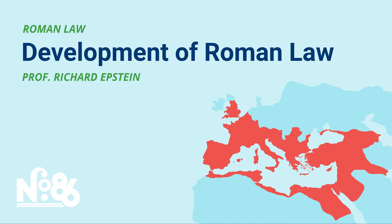Rome went through some pretty big historical changes, like becoming an empire. How did that affect the legal system? When you're trying to figure out the way in which Roman law evolves, it's a very long period of time. Probably the single most important break is the end of the Republic after the death of Caesar and the rise of Augustus, which spanned basically just before and just after the birth of Christ. There are two ways in which you can look at this: as a public law matter, and as a private law matter. If you're dealing with the public law matter, the changes are very large.